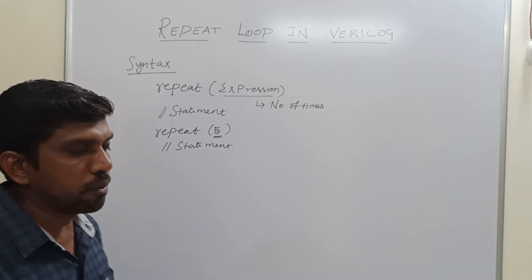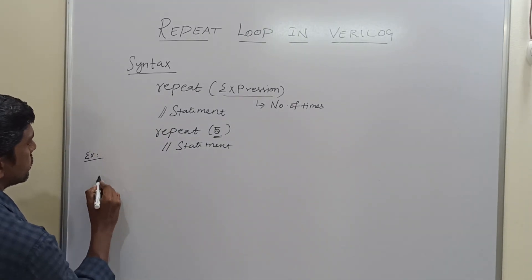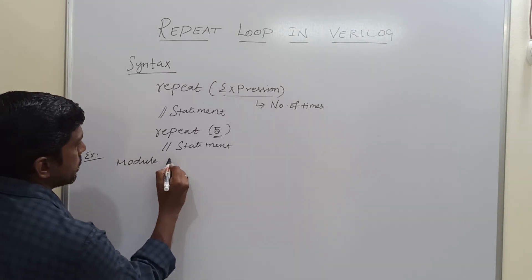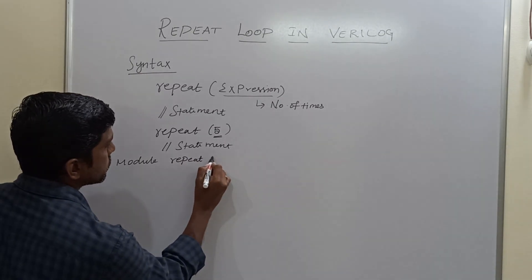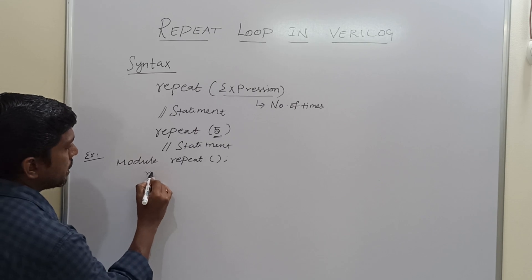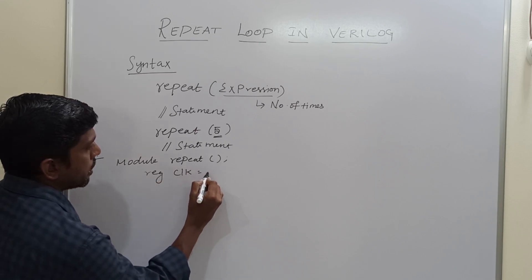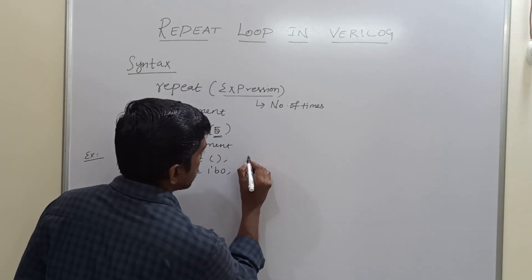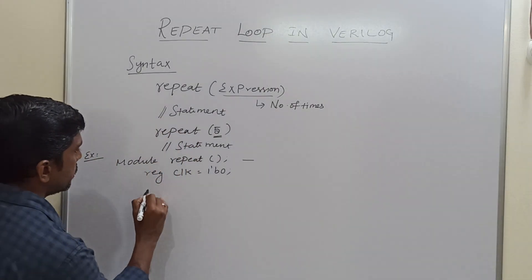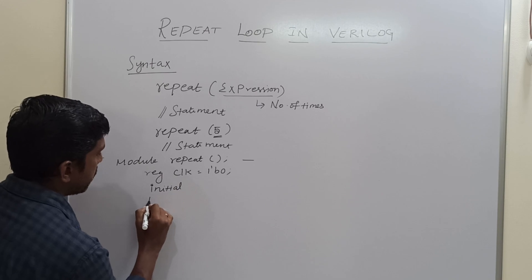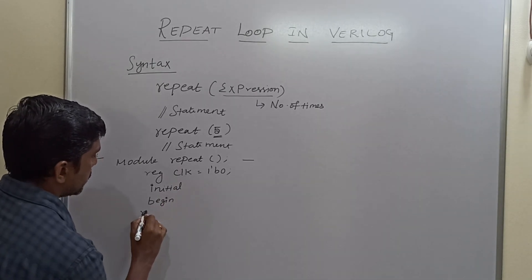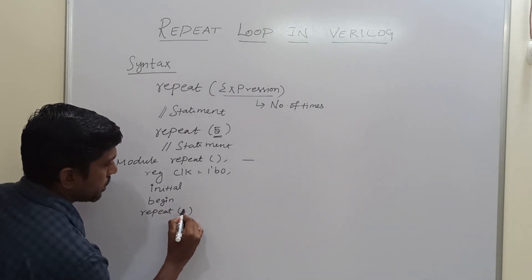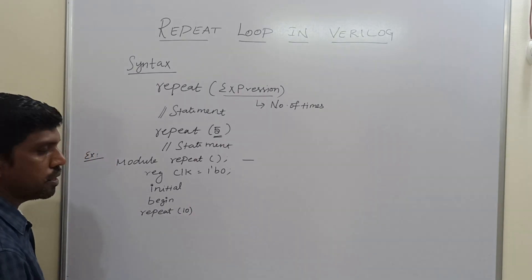Now I am going to write the example program for repeat loop. Here I will generate a clock frequency. First you write module, then the module name: repeat. Then declare a register: clock, equal to 1'b0. Initially the clock value is set to be 0. Then write initial begin, then the repeat loop. How many times? Here I am taking 10 — so repeat (10).